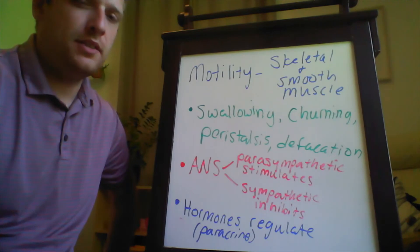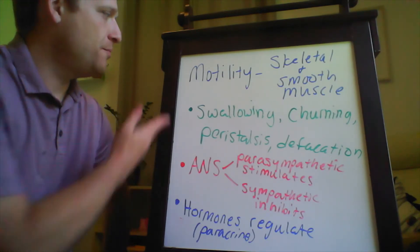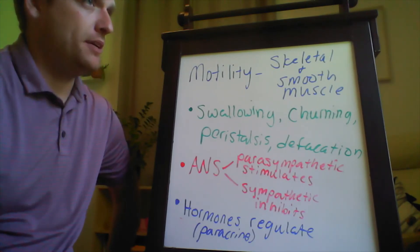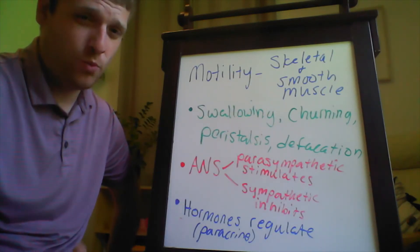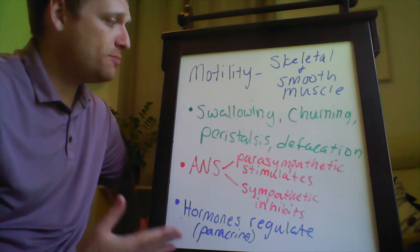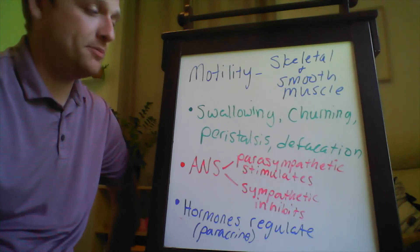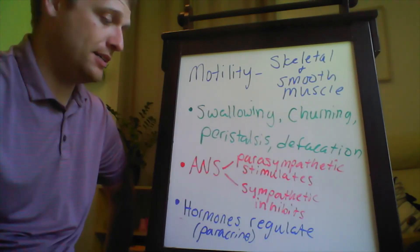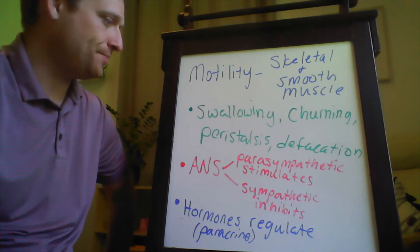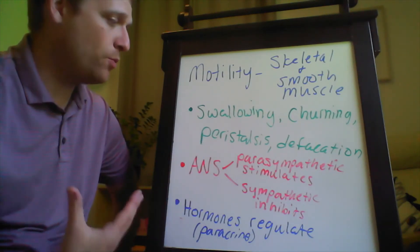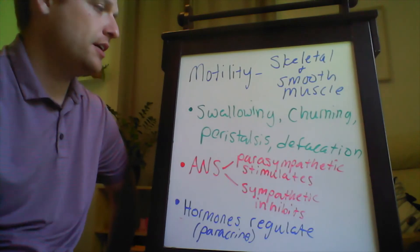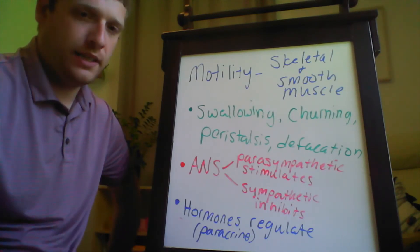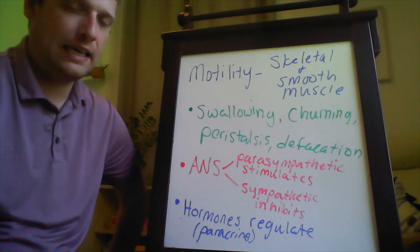Moving substances through the alimentary canal depends on the concept of motility — the ability to be moved. Motility in the digestive tract depends on both skeletal and smooth muscle, depending on which part of the process you're discussing. The movement of substances through the digestive tract consists of swallowing, churning in the stomach for mechanical digestion, peristalsis (rhythmic waves of contraction that move food in one direction), and finally defecation, which also requires muscular activity.